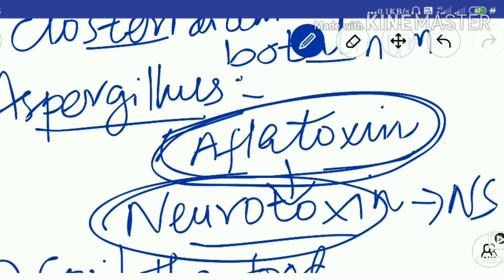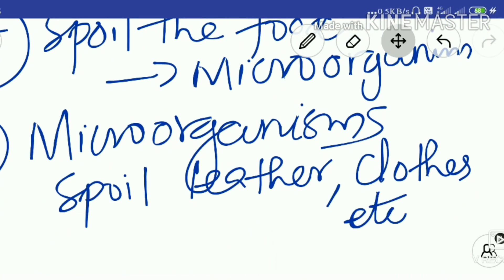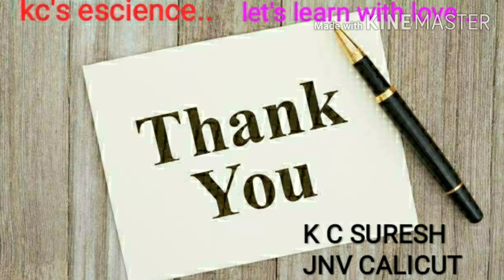The next harmful effect is spoilage of food — fruits and vegetables are immediately spoiled by microorganisms, especially fungi and bacteria. Microorganisms also spoil leather goods and clothing, especially when humidity is high in the rainy season, causing dark spots on cloth. These are the harmful effects listed in your textbook. Hope you understood this part.